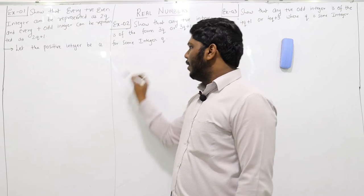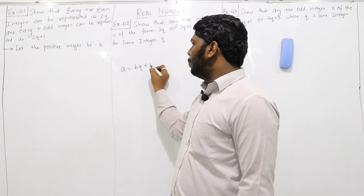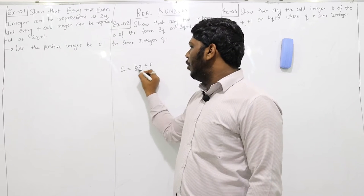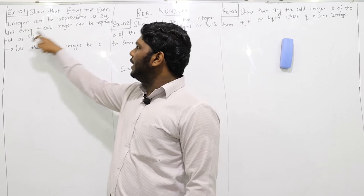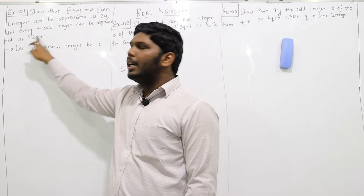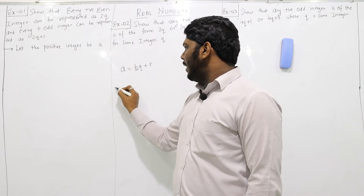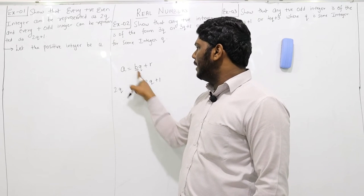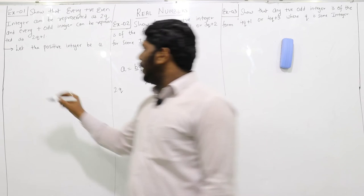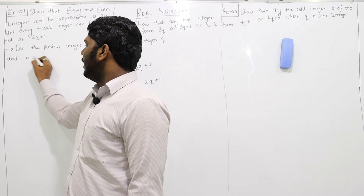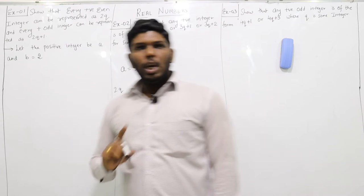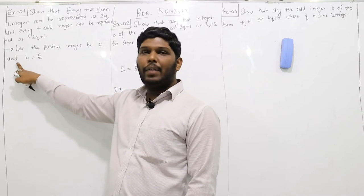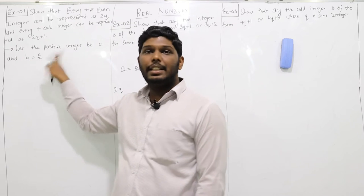In Euclid's division lemma, we know that a can be represented as bq plus r. So the next step is to find the value of b. Here, two forms are given — that is 2q and 2q plus 1. If I compare both, in both cases b is replaced by 2. So we can write b is equal to 2.